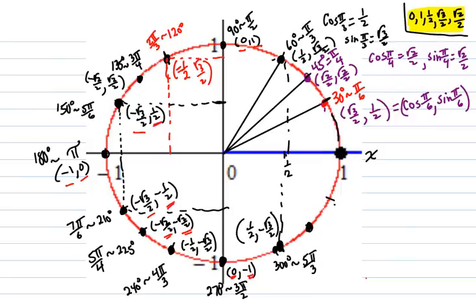Moving over to this point: 45 degrees past 270 is 315 degrees, coterminal to 7π/4. The coordinates of that point are √2/2, negative √2/2. That's the cosine and the sine of 7π/4.